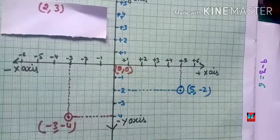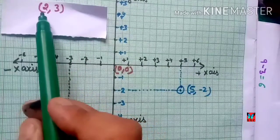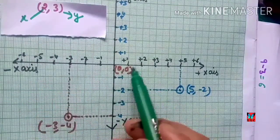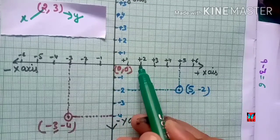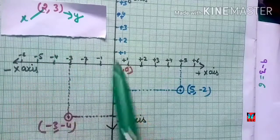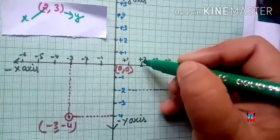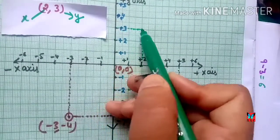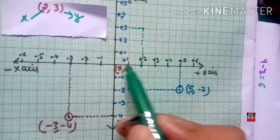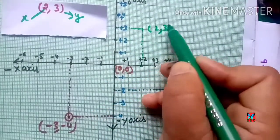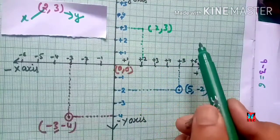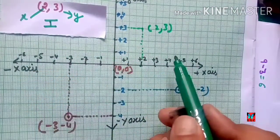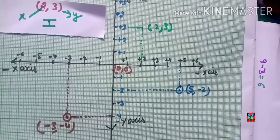Now I will plot the point (2, 3). The x-coordinate is 2 and y-coordinate is 3 — both positive. On the x-axis we take positive 2, and on the y-axis we take positive 3 (upward). Where both lines intersect is the point (2, 3), which lies in the first quadrant, where both x and y are positive.